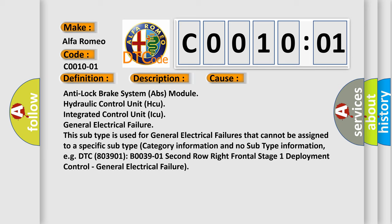For example, DTC B0039-01, 2nd row right frontal stage 1 deployment control, general electrical failure. The Airbag Reset website aims to provide information in 52 languages.